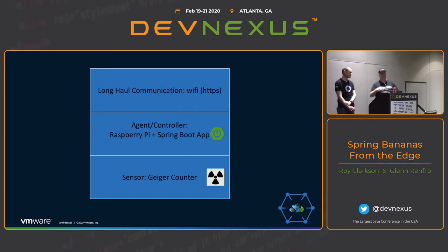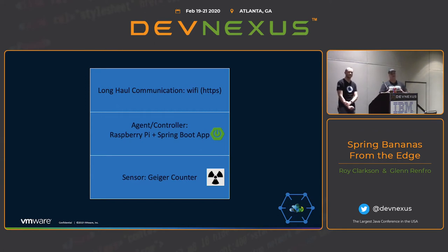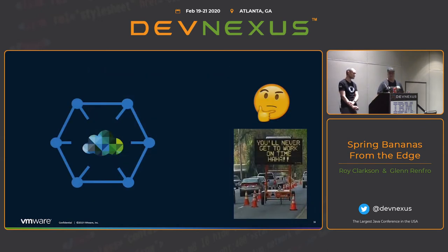The controller is going to receive data from the sensor — in my case, a Geiger counter. It's going to do the processing; I had a Spring Boot app do it. Yes, you can run Spring Boot on the edge. Then the agent takes that data the controller captured and sends it out. In this case, we did something very simple for this device — it just connects over Wi-Fi. In this room, I actually have it running and part of the presentation will show live data.